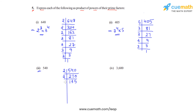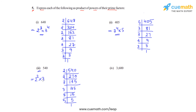135 can be divided by 3 and that gives us the answer as 45. 45 on division by 3 gives us the answer as 15. 15 again on being divided by 3 gives us the answer as 5. 5 can be divided by 5 and that gives us 1. So 540 can be written as 2 raised to 2 times 3 raised to 3 times 5.